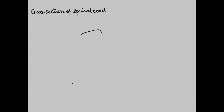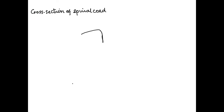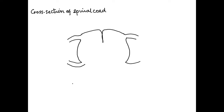In this video I'm going to show how to draw the cross section of the spinal cord. We begin by drawing the dorsal side with a dorsal fissure, and then forming the dorsal roots on either side. Then we extend it down to form the ventral roots on either side and then the ventral fissure.